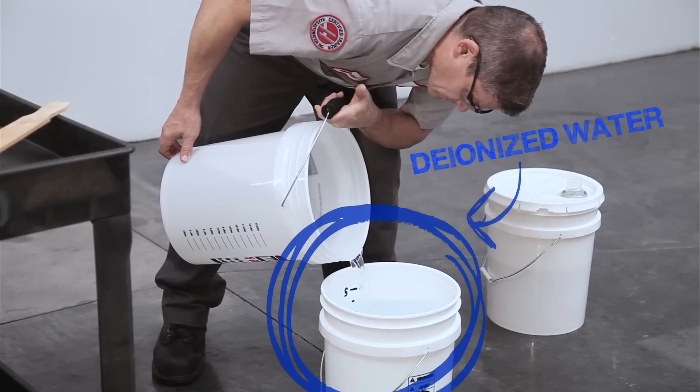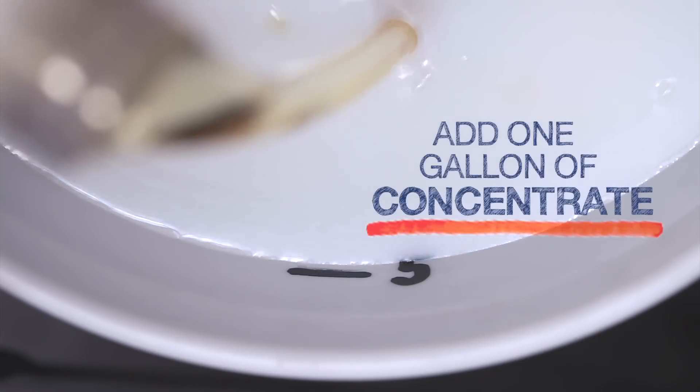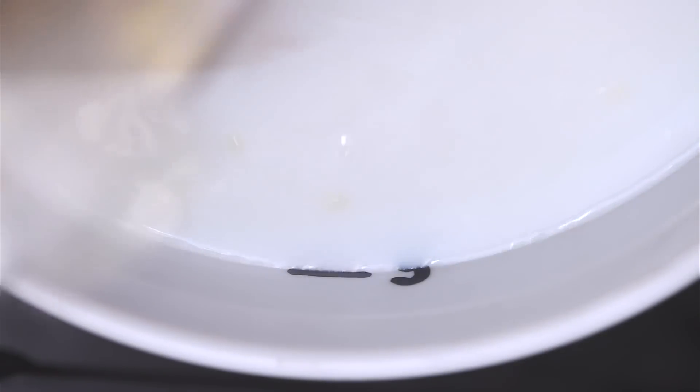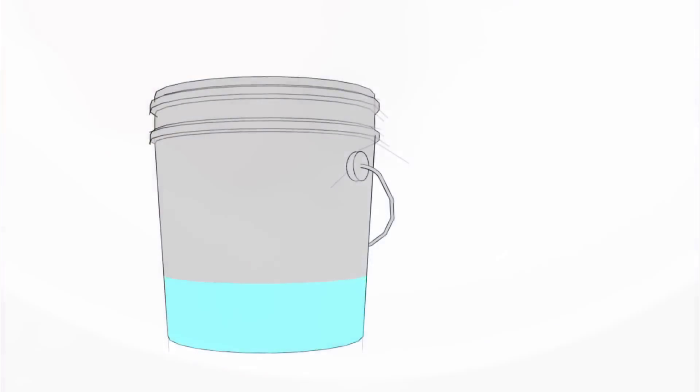So we start with deionized water in the bucket, then we add one gallon of concentrate. Mix the concentrate into the water thoroughly. Remember to always add the water first and then add the concentrate, never the other way around.